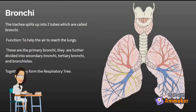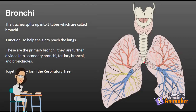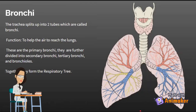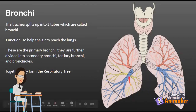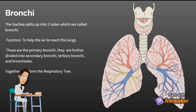Next, we'll be learning about the bronchi. The trachea splits up into two tubes which are called the bronchi. Its function is to help the air reach the lungs. These are primary bronchi, and they are further divided into secondary bronchi, tertiary bronchi, and bronchioles. Together, they form the respiratory tree.